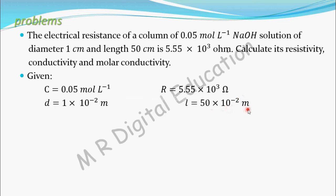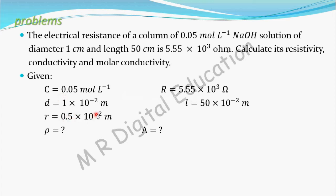Now we have to calculate resistivity of this NaOH solution. Since diameter is 1 into 10 to the power minus 2 meter, the radius will be half of that, which is 0.5 into 10 to the power minus 2 meter. We have to find resistivity rho, conductivity kappa, and molar conductivity lambda.